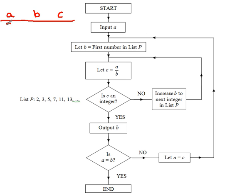Start. Input A — A is 90, we're told that in the question. Let B equal the first number in list P, that's 2, so B is 2. Let C equal A divided by B — 90 divided by 2 is 45.